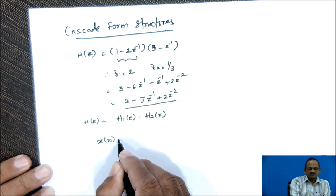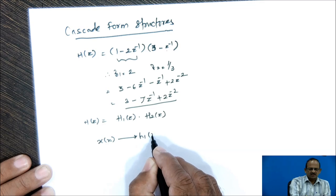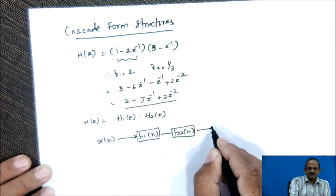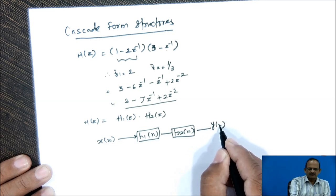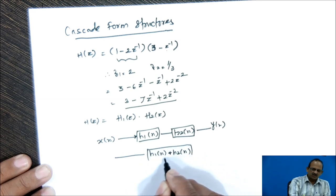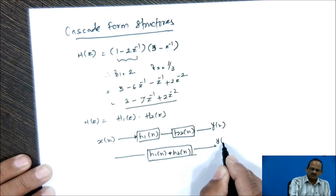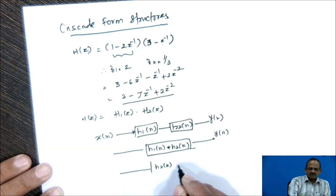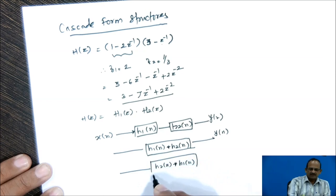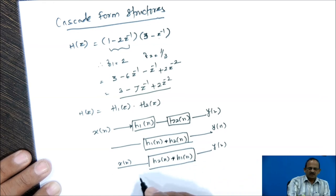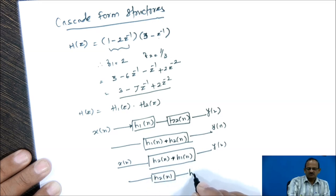When two systems are connected in cascade, the first system has unit impulse response H1n, which is given to the second system whose unit impulse response is H2n, and the output is Y of n. The equivalent system is H1n convolution H2n. According to the commutative property, this can also be written as H2n convolution with H1n, meaning you can change the order of the two systems.